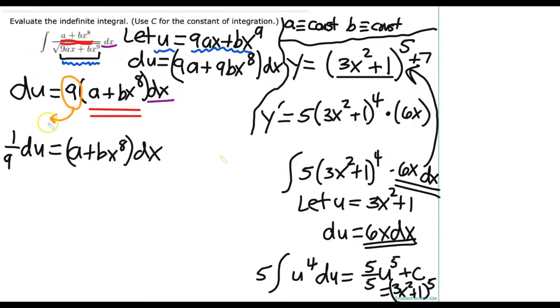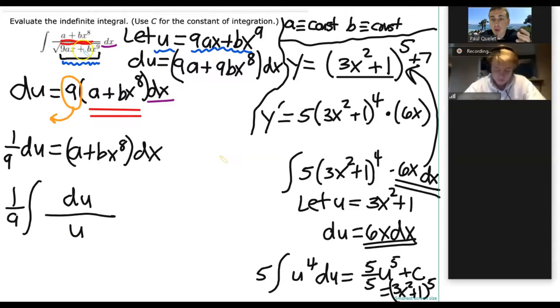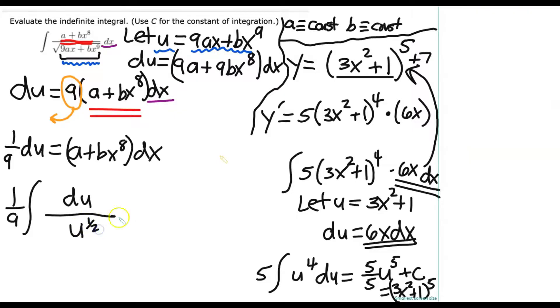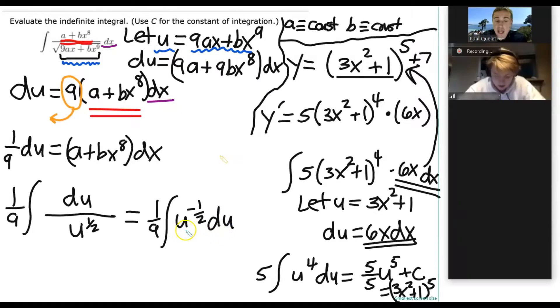And now, all that becomes the numerator. And we're just going to put 1 over 9 out front of this integral. Because we can say, this is now integral 1 over 9. And then remember, this whole numerator, a plus bx to the eighth dx, all just becomes du. As long as we have the 1 over 9 out front. And then we just have u to the square root. Now, by the way, the square root is actually what power, as a fractional power? One half. That's right. One half. And look at that. That's a heck of a lot easier to have taken antiderivative of.